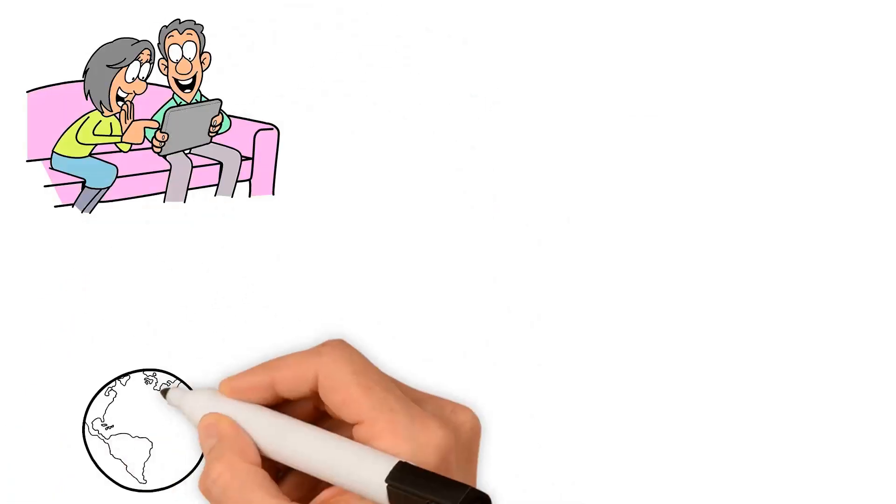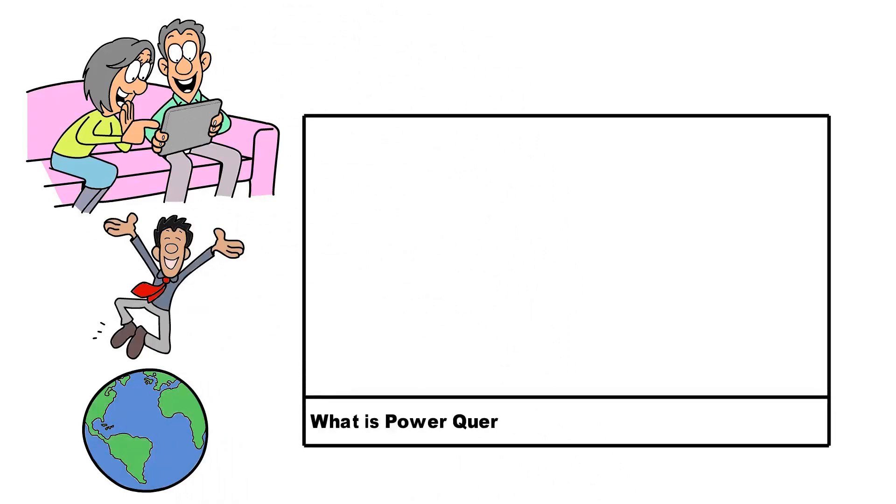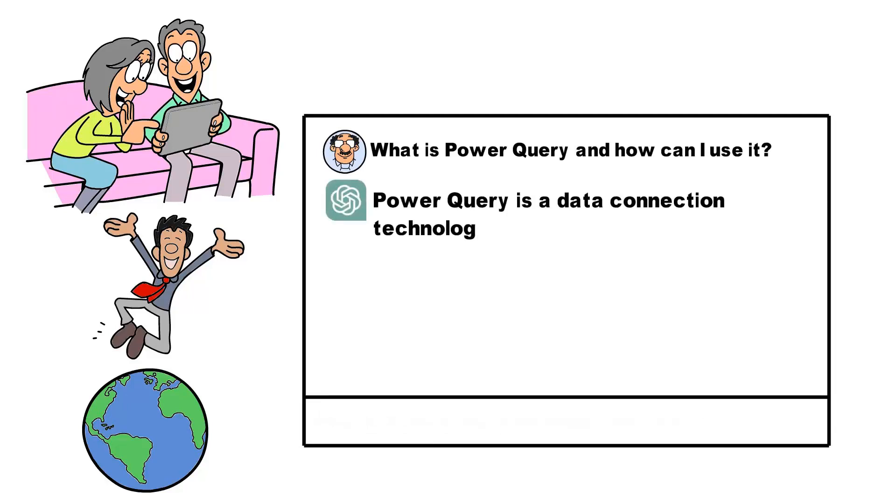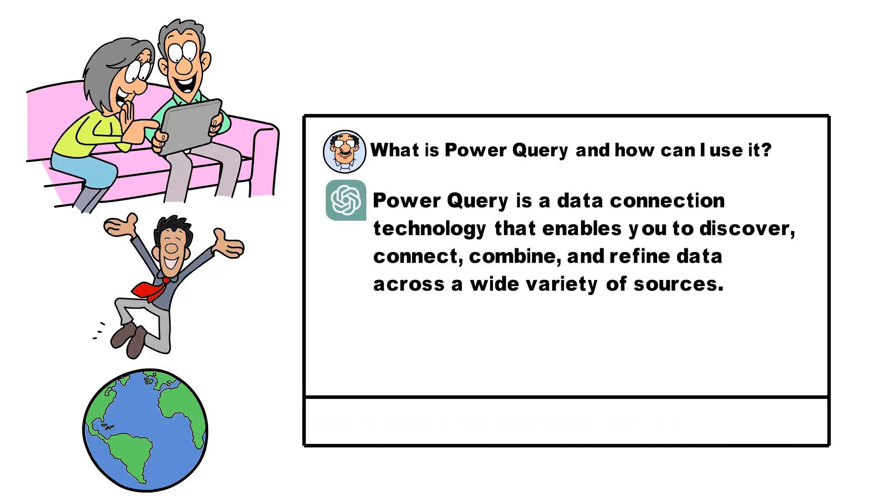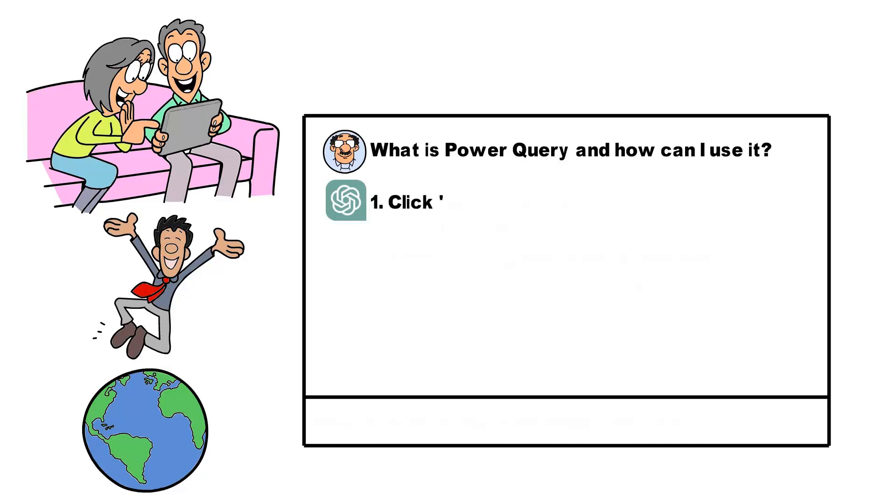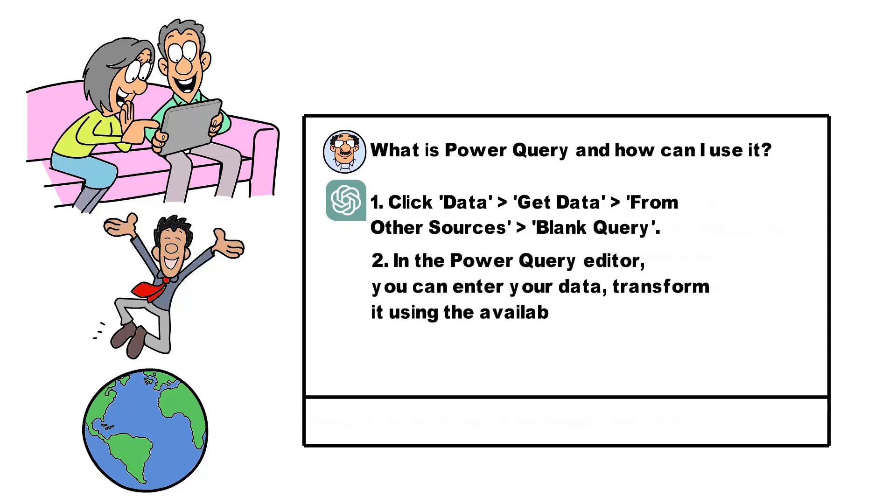When exploring underutilized features, suppose you ask, what is Power Query and how can I use it? ChatGPT might explain that Power Query is a data connection technology that enables you to discover, connect, combine, and refine data across a wide variety of sources. It could then guide you to: 1. Click Data, Get Data from Other Sources, Blank Query. 2. In the Power Query Editor, you can enter your data, transform it using the available tools, and load it back into Excel.